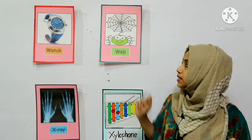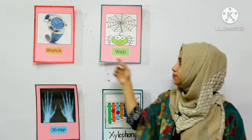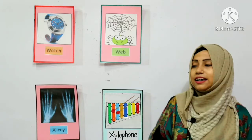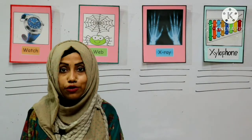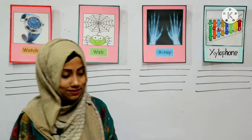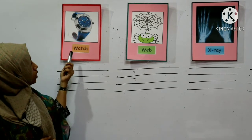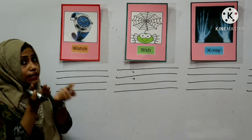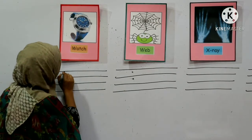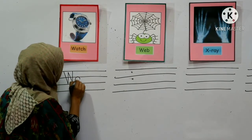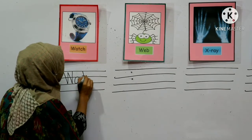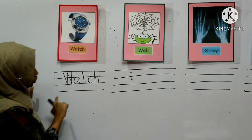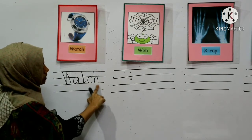Let's recall the words one time: watch, web, x-ray, xylophone. Teacher will write the word on the board and you will follow your teacher. Can you tell me what picture is this? Watch. We know the sound of letter W — it's wa. So W and A, wa, then C-H. Watch. W-A-T-C-H. Watch.